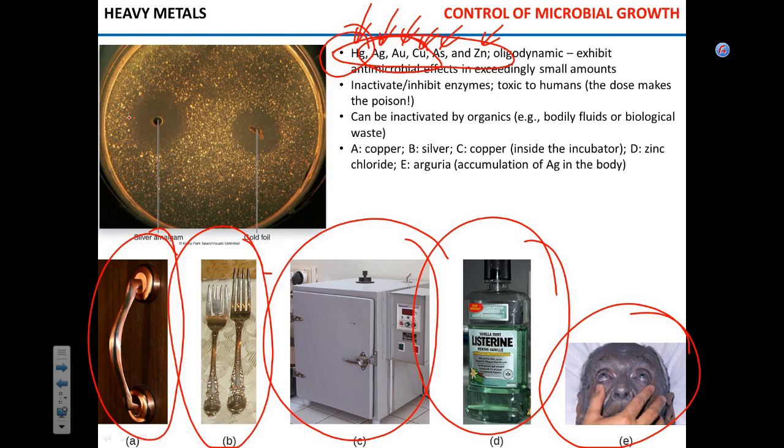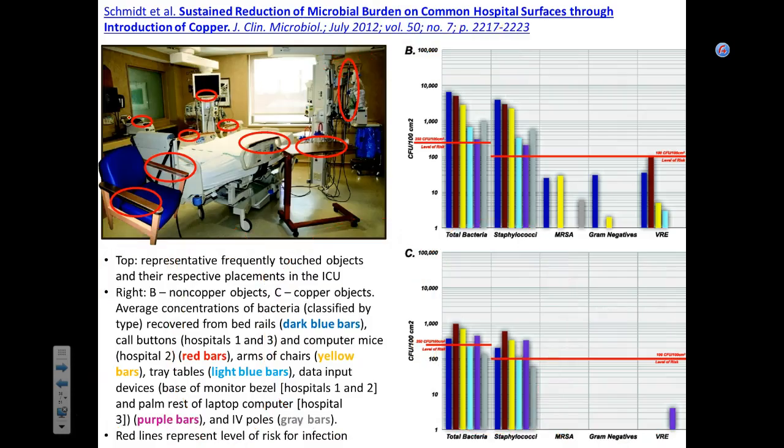Why not gold? It's expensive. You can gold-plate all the doorknobs in your house if you have money, but it's not practical. Copper, of course, because of the cost, is extensively studied as a potential antimicrobial agent.